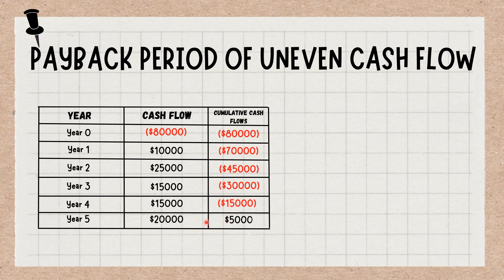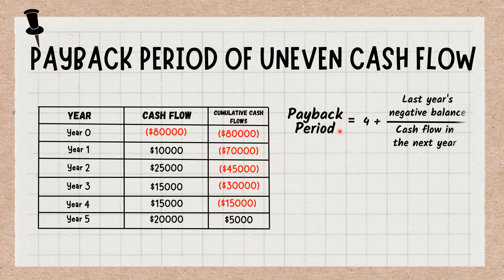In the fifth year, we will recover all the amount that we invested. So the formula of calculation will be 4 plus last year's negative balance divided by cash flow in the next year. That will be 4 plus $15,000 divided by $20,000, which is 0.75. So the payback period will be 4.75, or 4 years and 7 months.